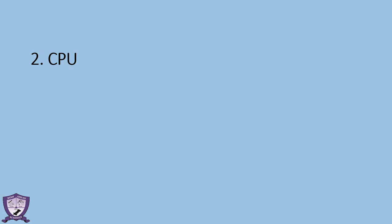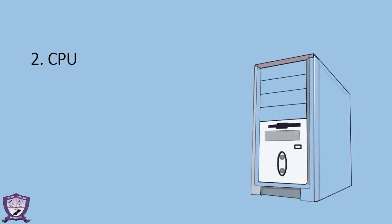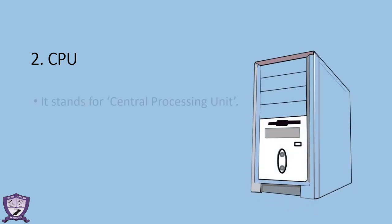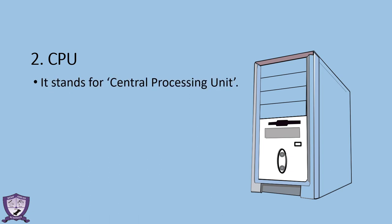Next, CPU. This is the CPU. It stands for Central Processing Unit. C stands for Central, P stands for Processing, and U stands for Unit — so CPU means Central Processing Unit.